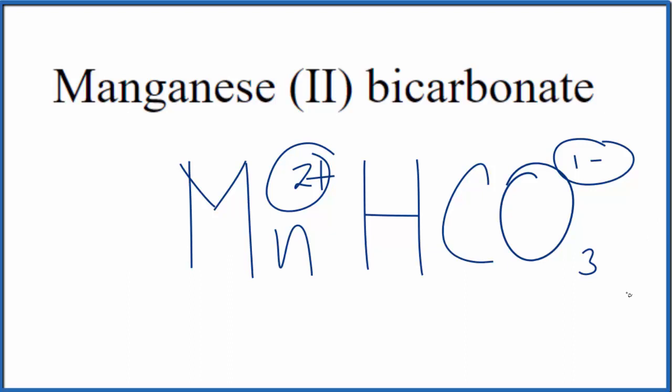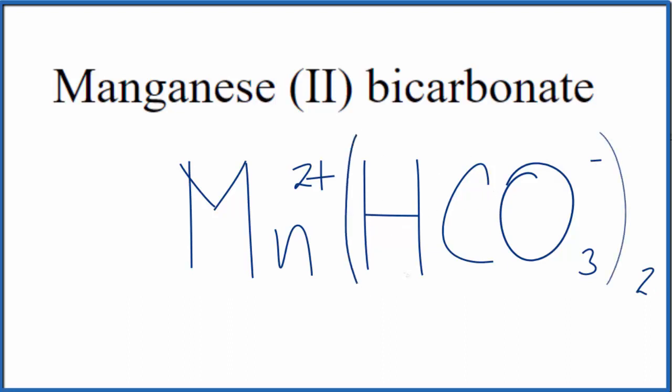So to do that, we could put a 2 here outside of our bicarbonate. So we'd have two of these bicarbonate ions. Then we'd put parentheses around the bicarbonate ion and get rid of these symbols.